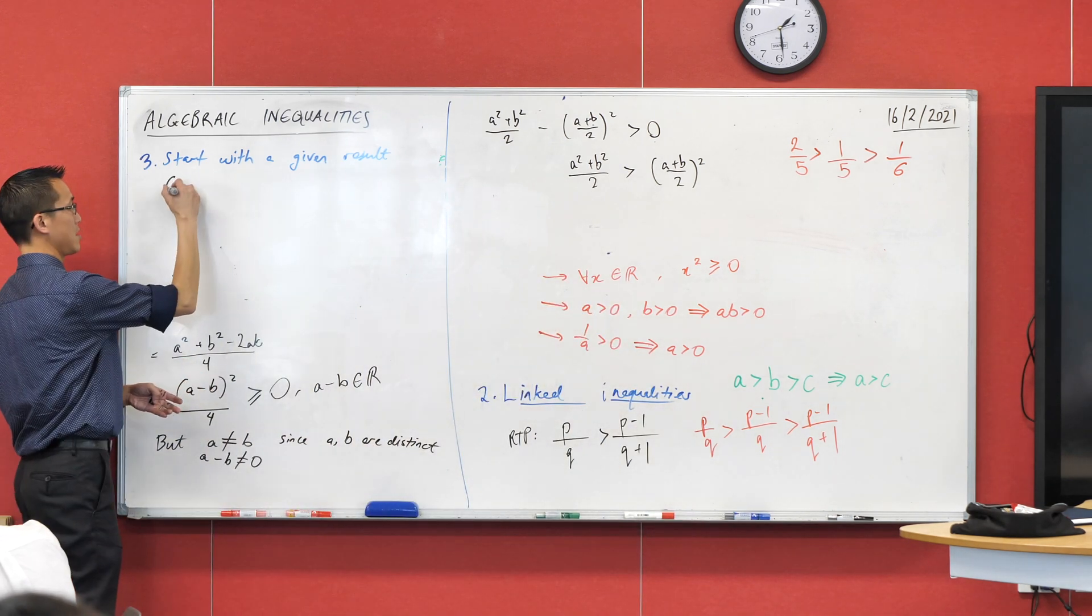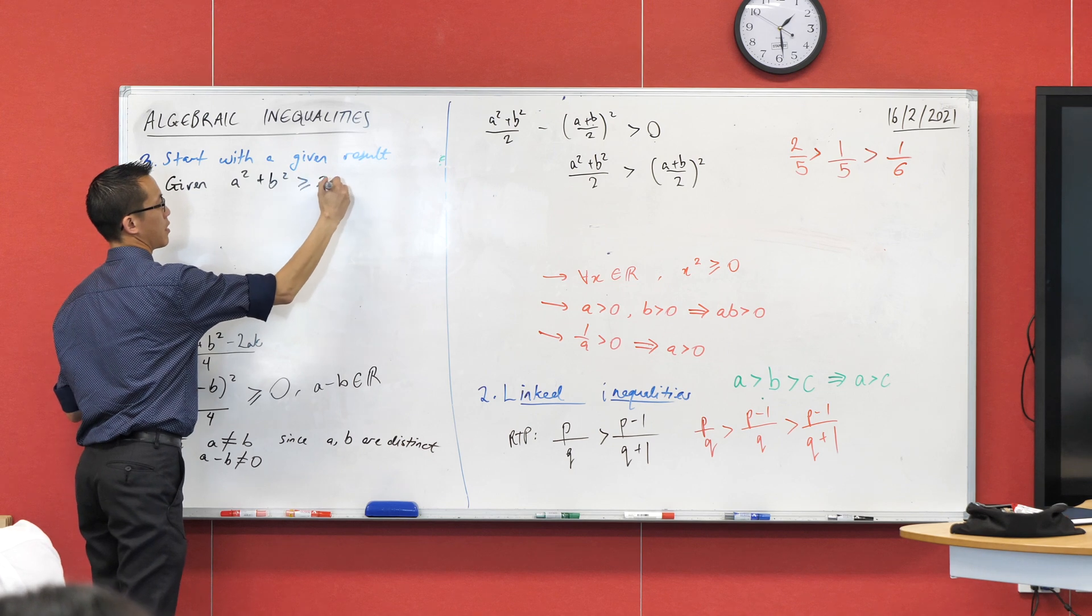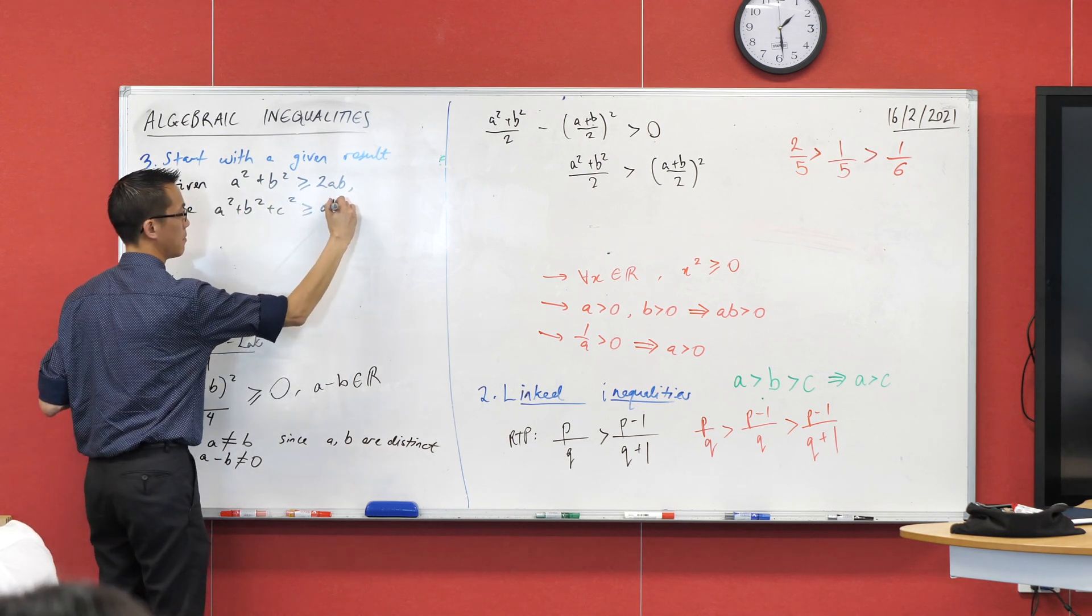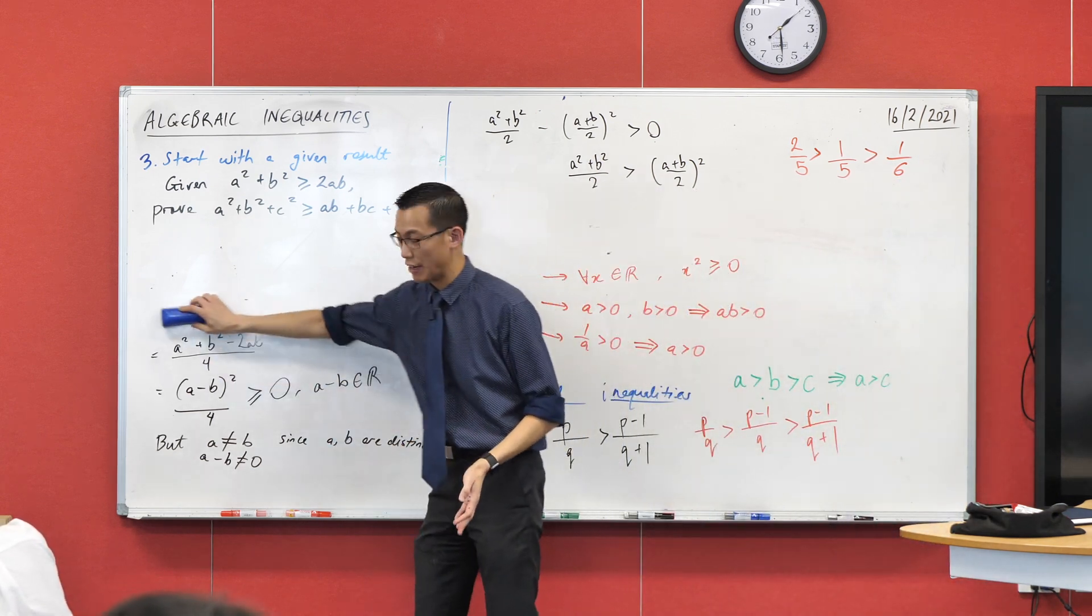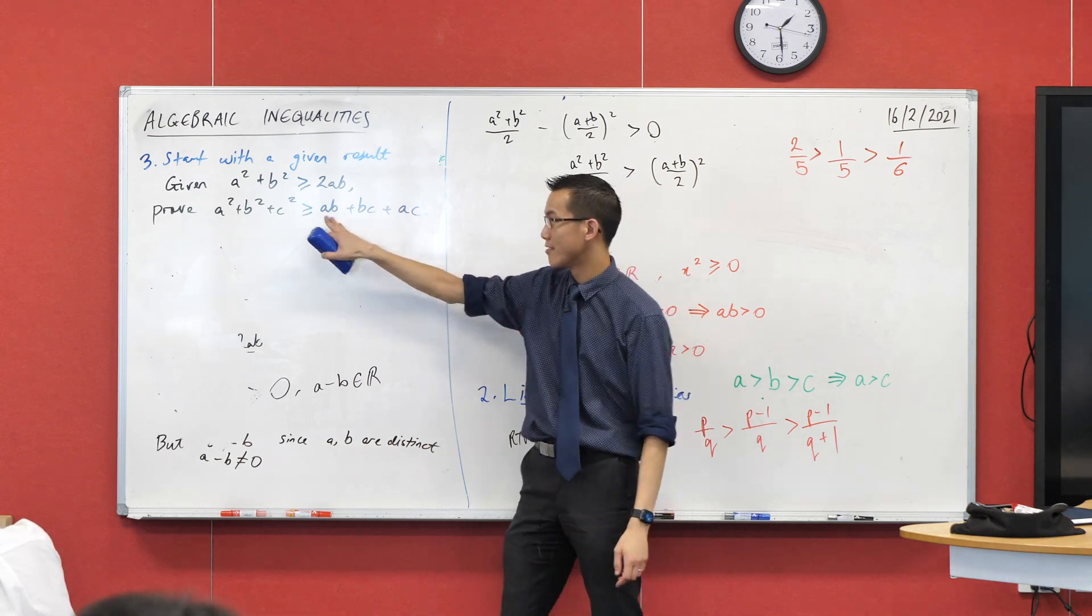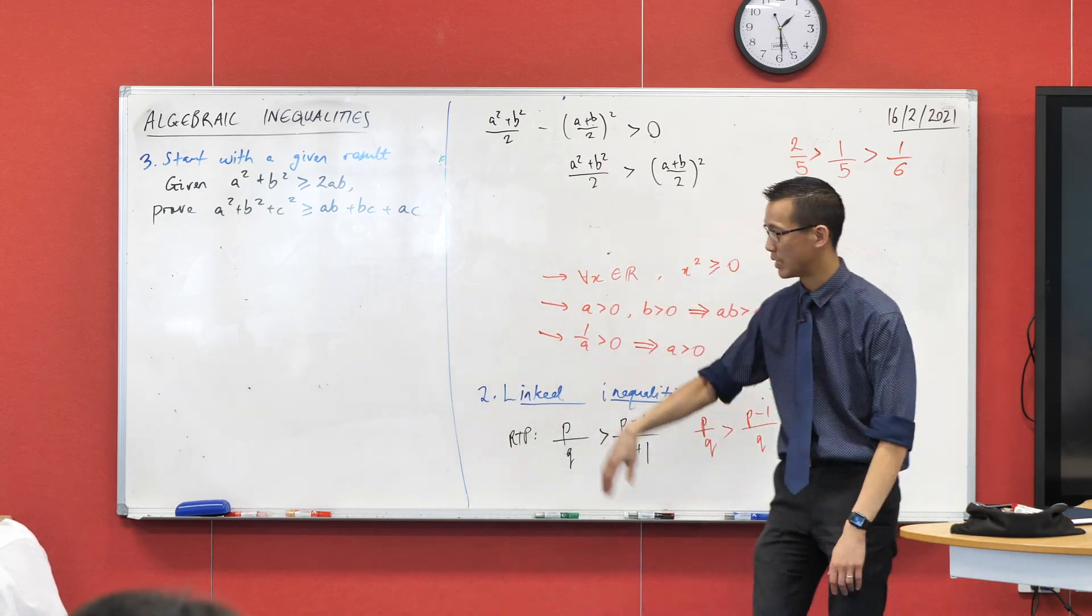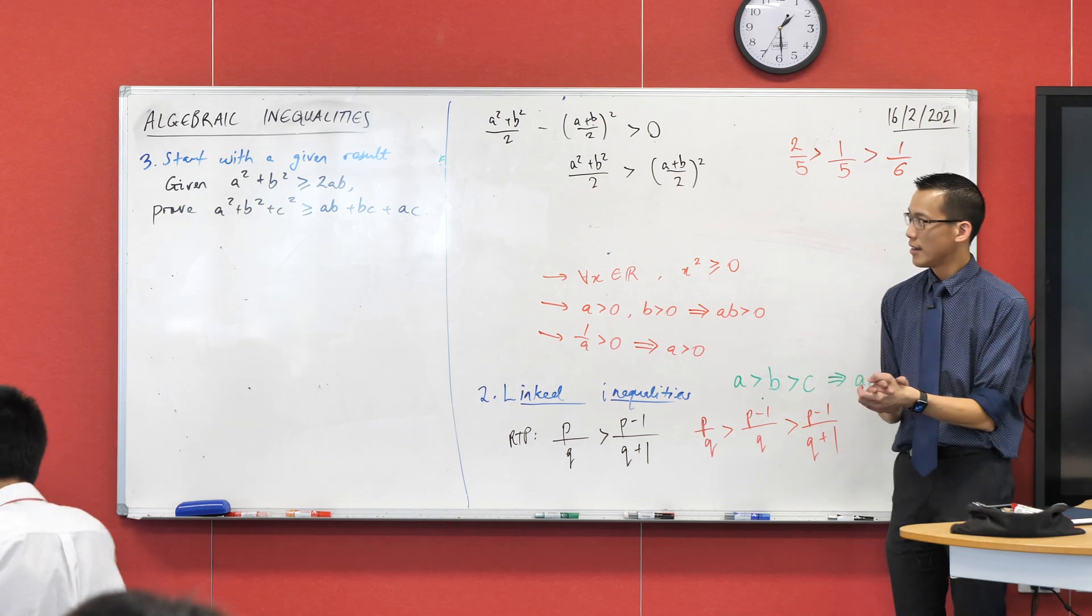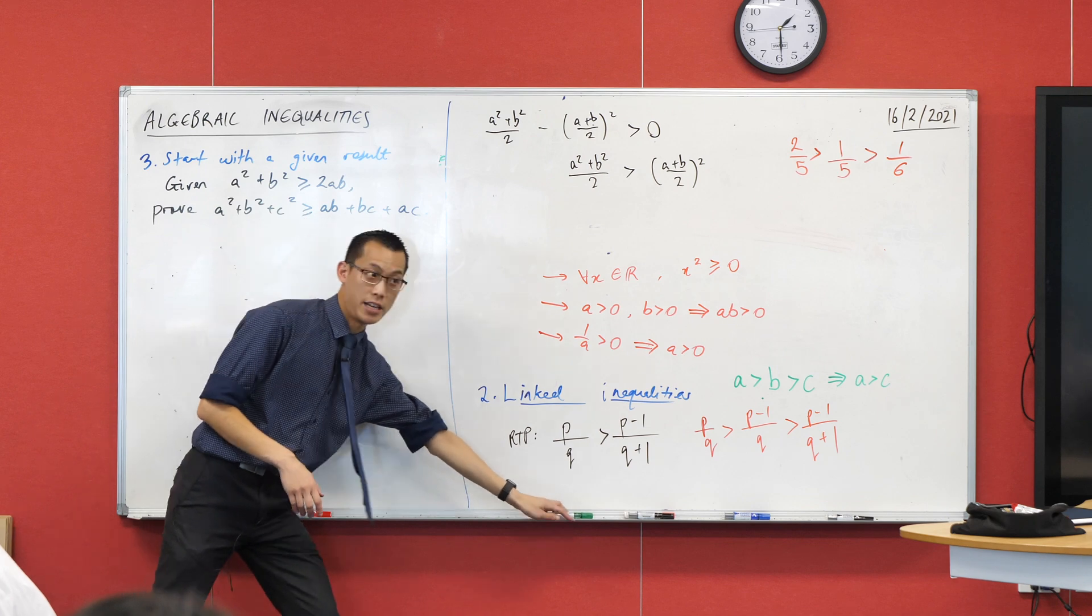Many of your proofs will try to give you a leg up into the result that you're trying to prove. So use the stepping stone they provided - that given result - and then use that as a launch pad to prove whatever result you want. Here's an example I pulled out already. Given: a² plus b² is greater than 2ab. Prove: a² plus b² plus c² is greater than ab plus ac plus bc.